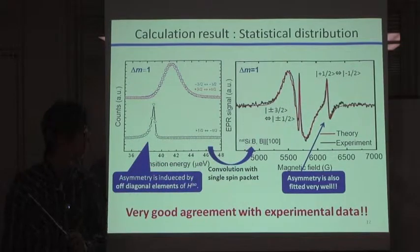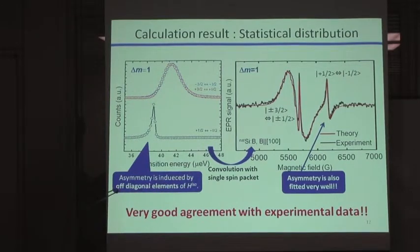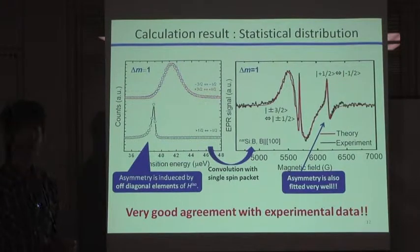We found that this asymmetry is induced by the off-diagonal element or a counter-mixing effect of isotopically perturbation Hamiltonian. So, from this result, we have concluded that the actual source of the residual Gaussian broadening is isotope-induced ground state splitting.